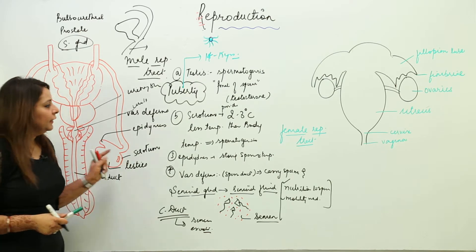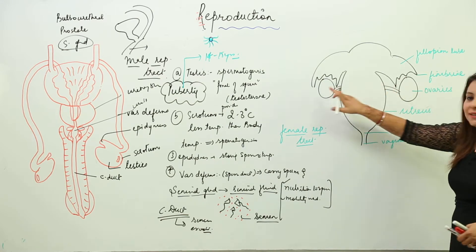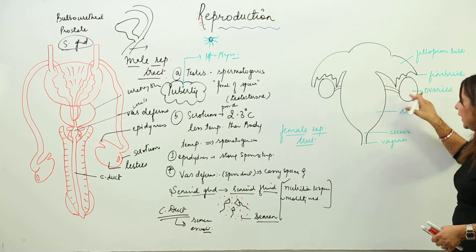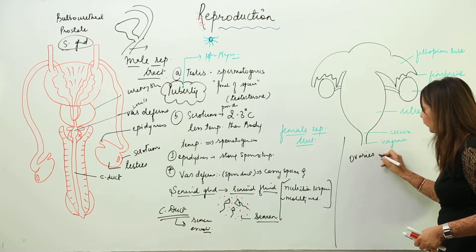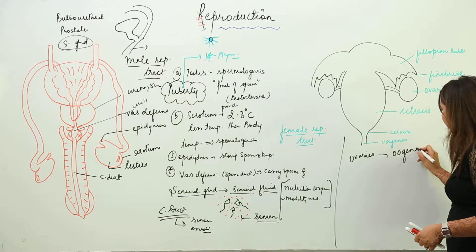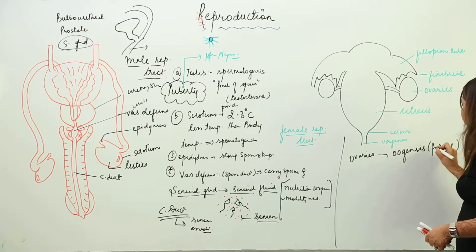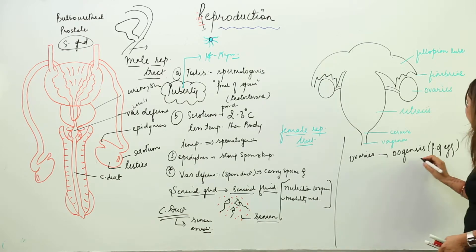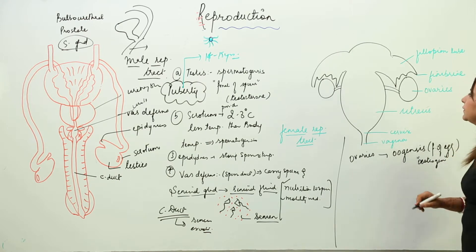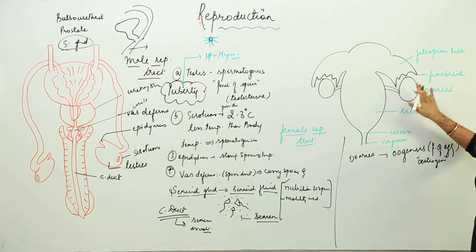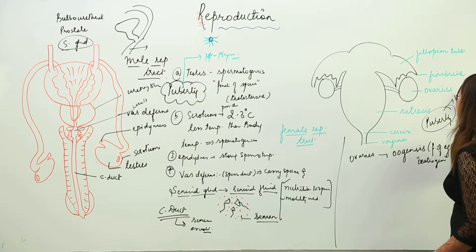Now moving on to the female reproductive tract. There is a pair of ovaries. The function of the ovary is oogenesis — that is the formation of egg — facilitated by the female sex hormone estrogen. Egg formation starts in females at the age of puberty, which is around 11 to 13 years of age.